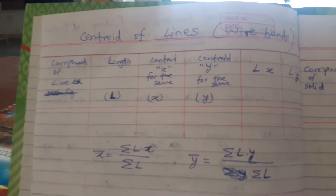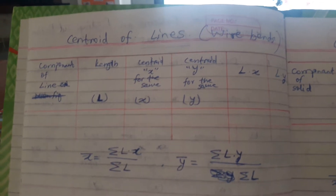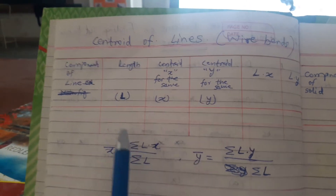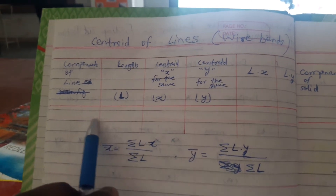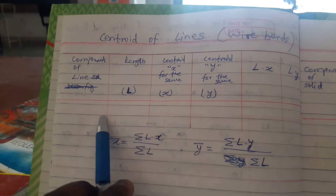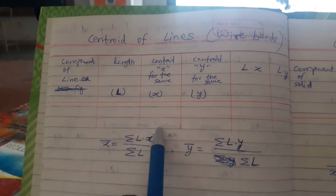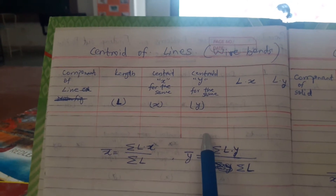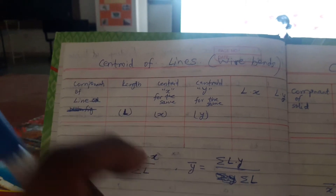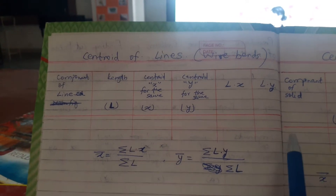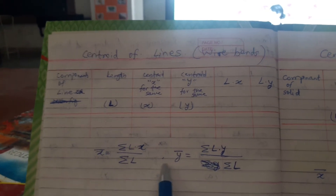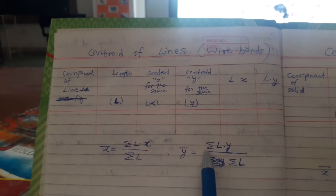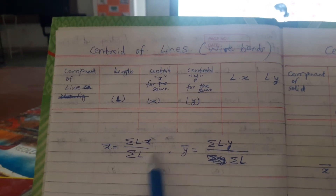For finding the centroid of lines or wire bends, the procedure is the same. We prepare a table with columns for the component of line, the length of that component, centroid x and centroid y for each portion, and then lx and ly. The formula is: x̄ = Σlx / Σl and ȳ = Σly / Σl. This gives our final answer — our aim is to find x̄ and ȳ.